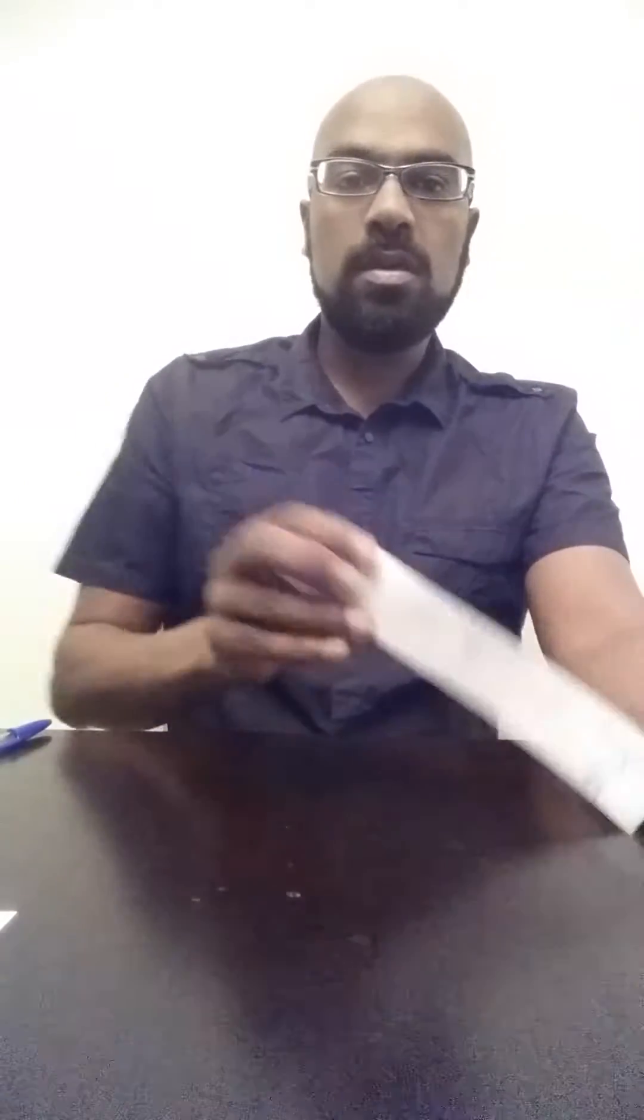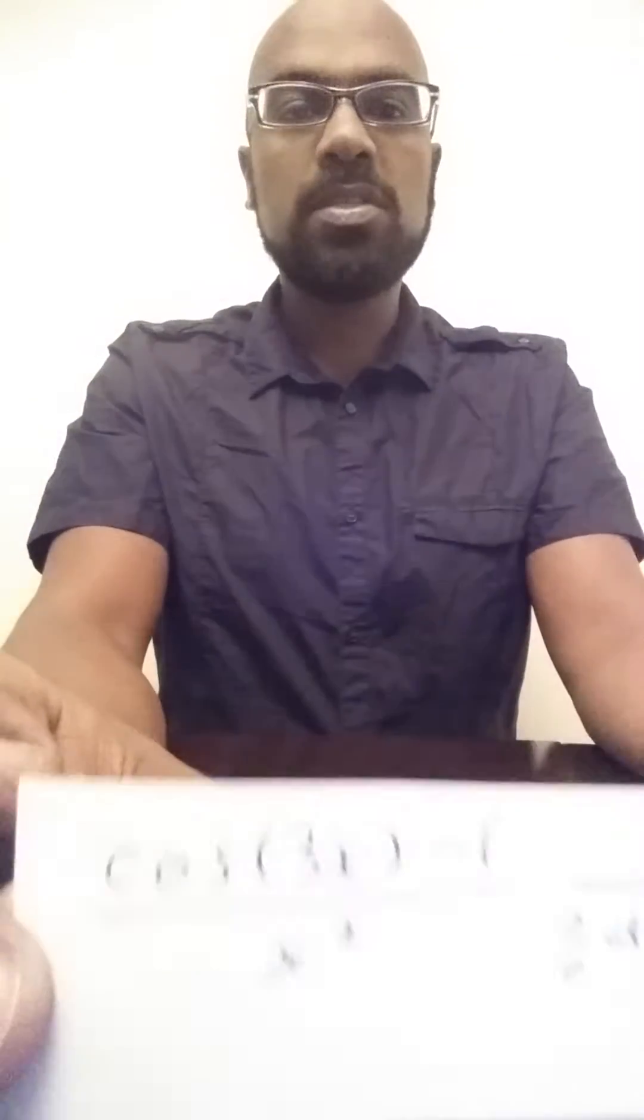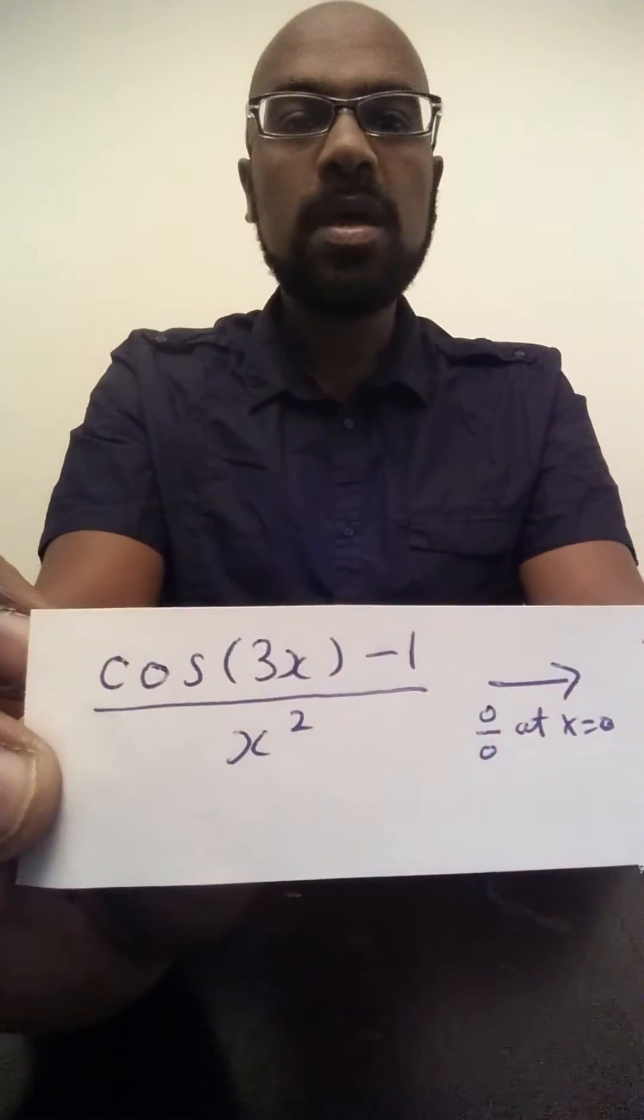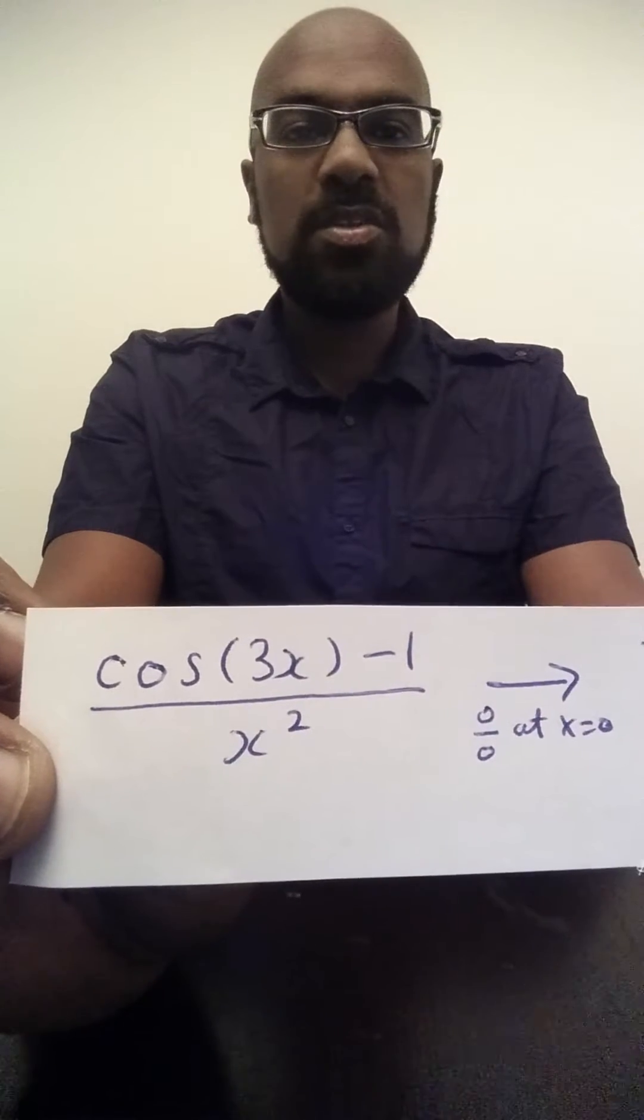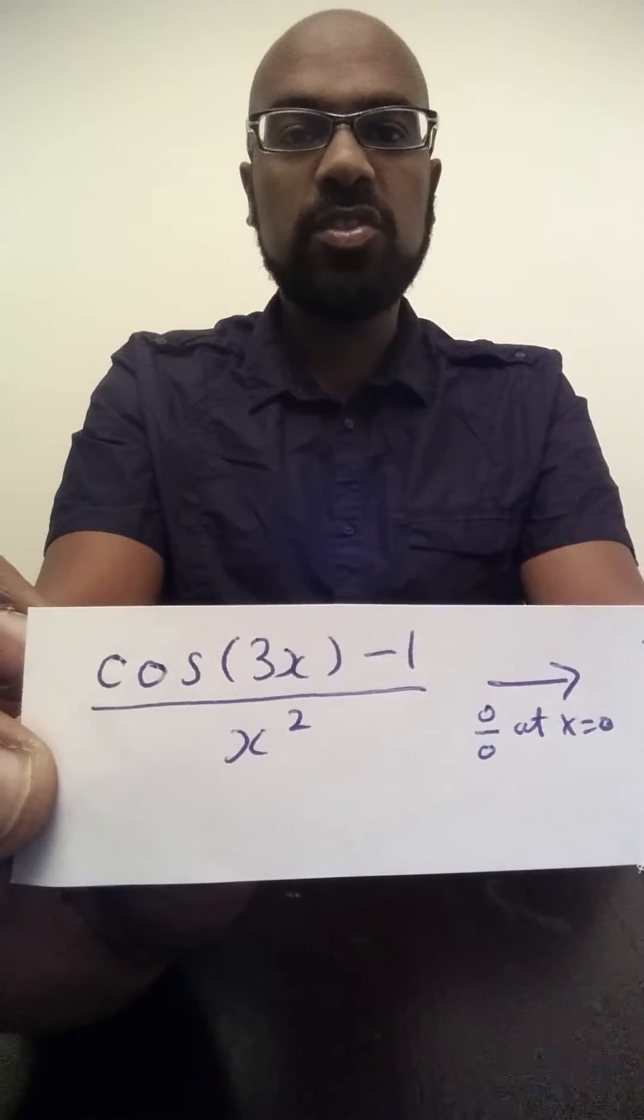So let's first start with the L'Hopital's rule approach. So we have this limit that we're concerned with. And we notice that at x equals 0, we have the indeterminate form 0 over 0.